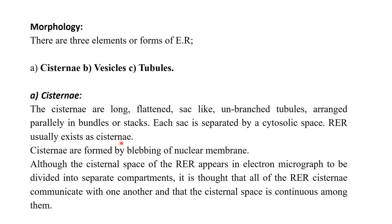Cisternae are formed by blebbing of the nuclear membrane — meaning an outward extension of the nuclear membrane. When the nuclear membrane extends outward, this is called blebbing, and the resulting flattened, long, unbranched tubule-like structures are called cisternae. They are close to the nuclear membrane and have ribosomes attached. The cisternae space of the rough endoplasmic reticulum appears in electron micrographs as separate compartments, but it is thought that all cisternae communicate with one another and the cisternae space is continuous among them.